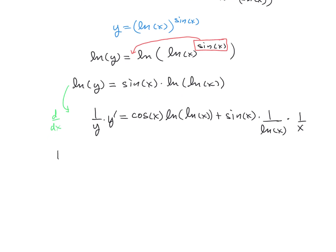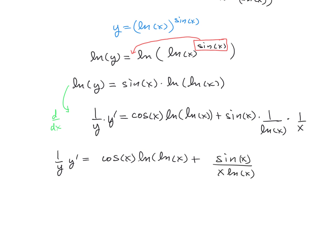So that is our derivative. We've got 1 over y times y prime is equal to the cosine of x times the natural log of the natural log of x, plus the fraction sine of x over x times the natural log of x.